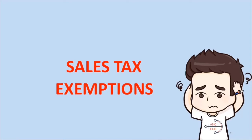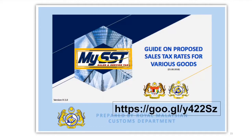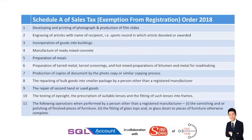In order to know whether you fall within the 5% or 10% tax rate, you can always refer to the order called the Rates of Tax Order. Or you can go to the various goods guide on proposed sales tax, which is much easier to understand. But if you cannot find your products there, you will likely have to go back to the order.